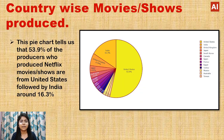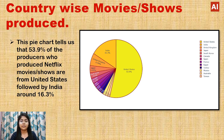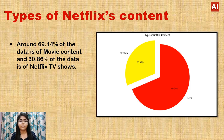Looking at country-wise movie and show production, the pie chart clearly shows that 53.9% of Netflix content is produced by the United States, followed by India at around 16.3%. Regarding types of Netflix content, approximately 69.4% of the data is movie content, and 30.86% is TV shows.